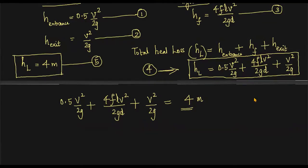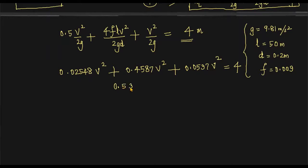Please calculate: g is equal to 9.81 meter per second square, length L is 50 meters, diameter is 0.2 meter, and coefficient of friction F is equal to 0.009. When you calculate, it is 0.53515 V square equals four. From this V square you will get, and when you take the square root you will get 2.734 meter per second is the average velocity of flow through the pipeline.